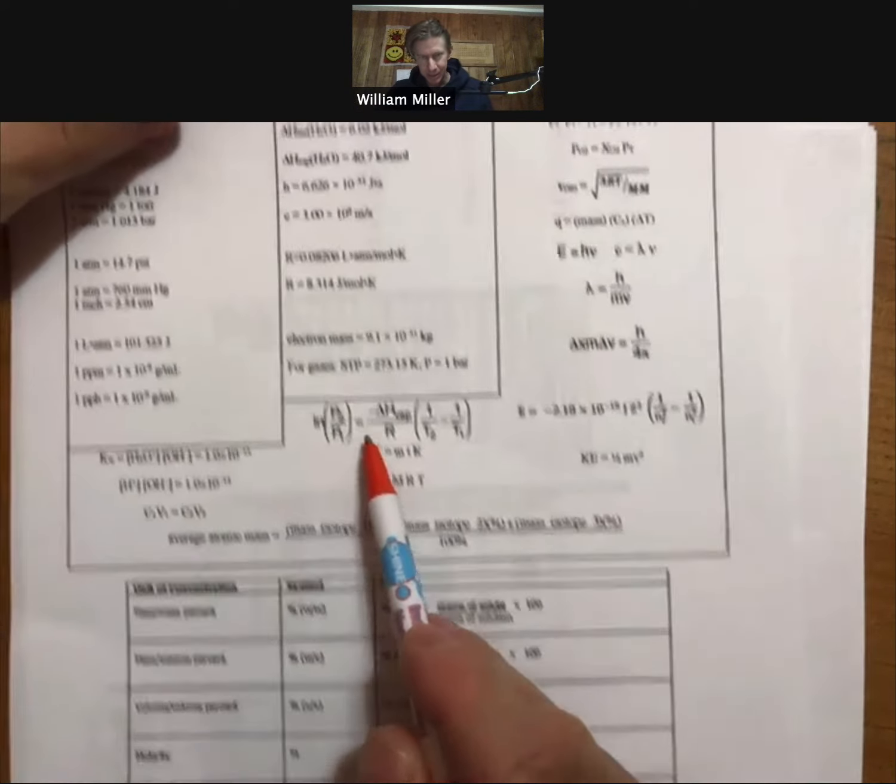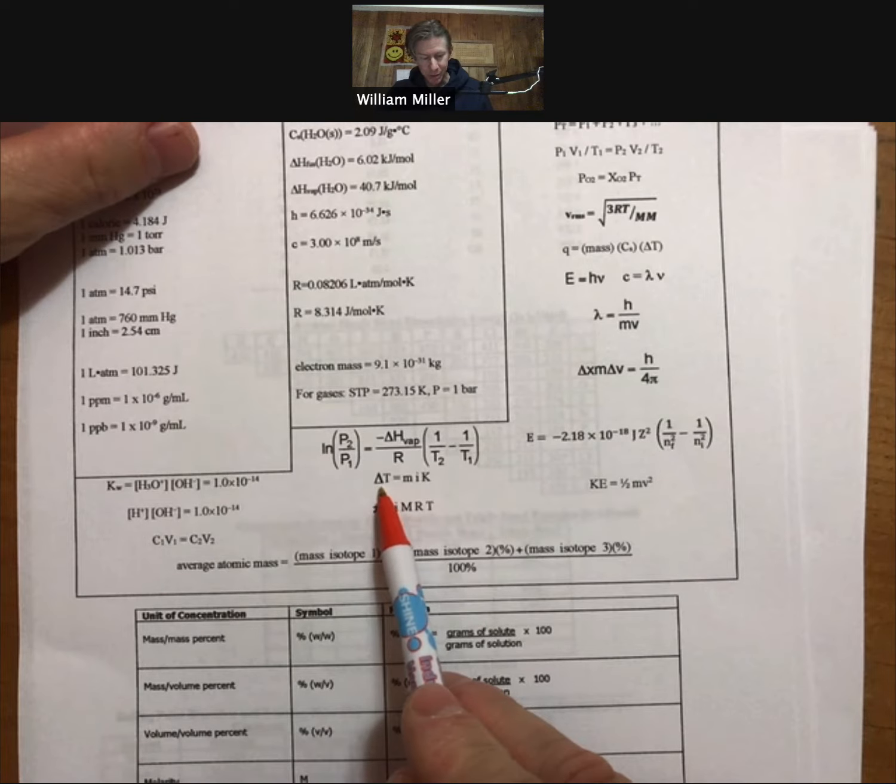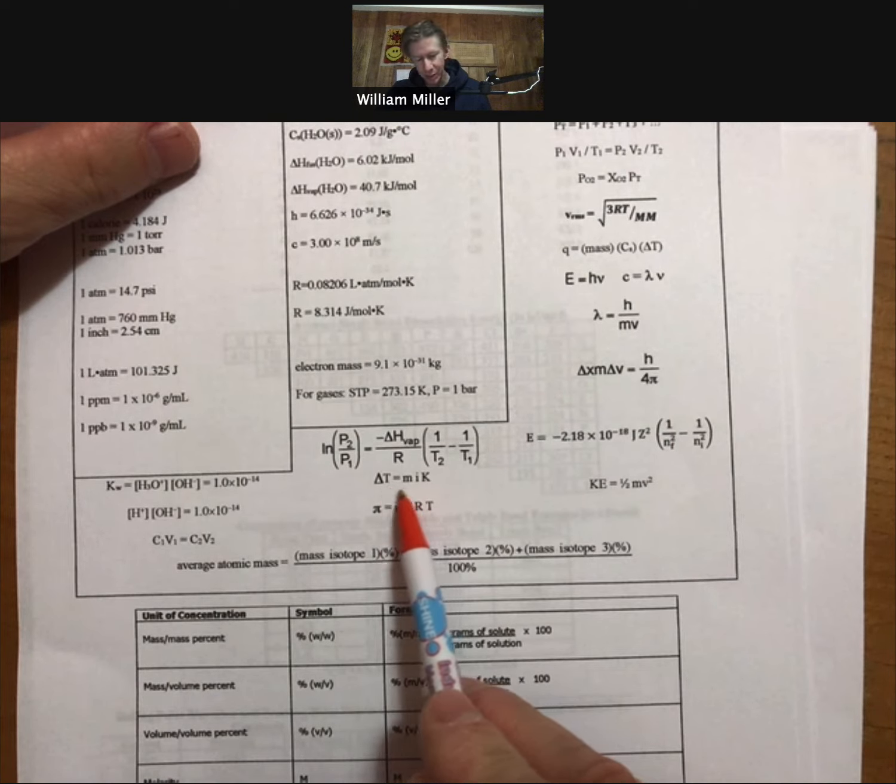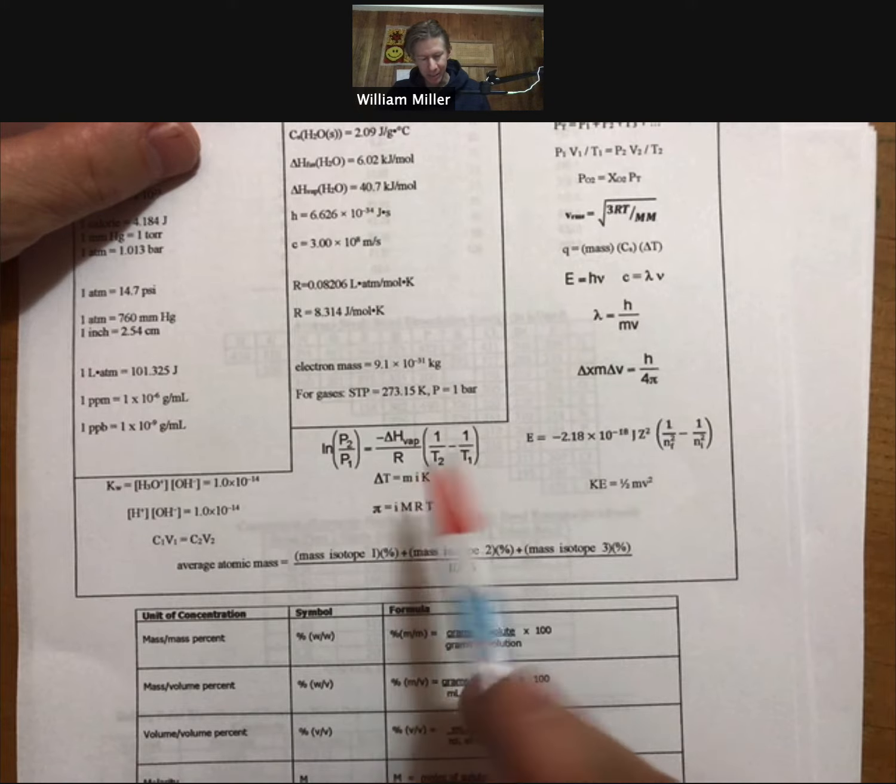Here is the freezing point depression and boiling point elevation equation: delta T equals m times i times Kf.